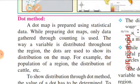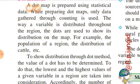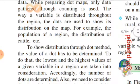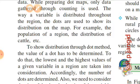A dot map is prepared using the statistical data. While preparing dot maps, only the data gathered through counting is used — yani ginati mein aate ho waise cheezon ke liye hum dot method use karte hain. For example, population of a region, the distribution of cattle etc. Population ke liye dot method use kar sakte hain, cattle/sheep ke liye bhi dot method use karte hain. Lekin forest ke liye dot method use nahi kar sakte kyunki trees counting mein nahin aate — wahan chloropleth ya isopleth use karenge. Temperature ke liye bhi isopleth use karna padega, aur rainfall ke liye bhi curve method use karna padega.